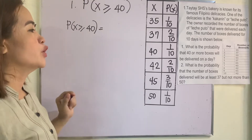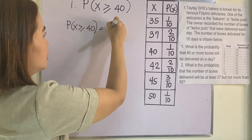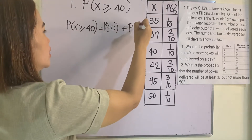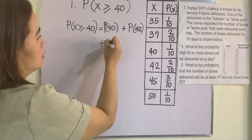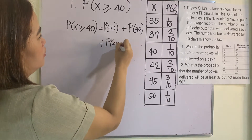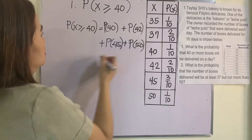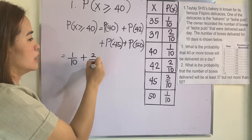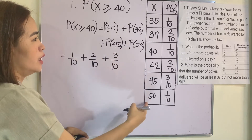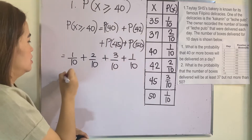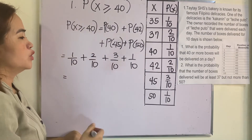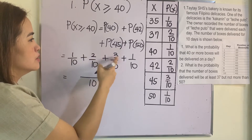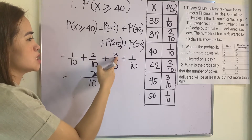The values greater than or equal to 40 are 40, 42, 45, and 50. So P(X ≥ 40) = P(40) + P(42) + P(45) + P(50) = 1/10 + 2/10 + 3/10 + 1/10. Adding the numerators: 1 + 2 + 3 + 1 = 7, so P(X ≥ 40) = 7/10.